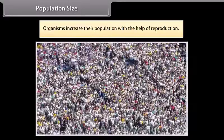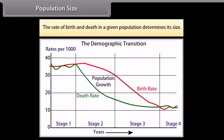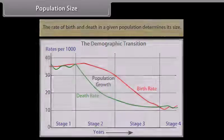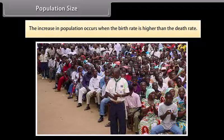Organisms increase their population with the help of reproduction. The rate of birth and death in a given population determines its size. The increase in population occurs when the birth rate is higher than the death rate.